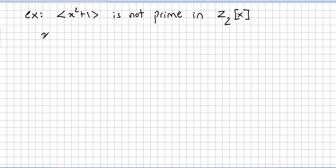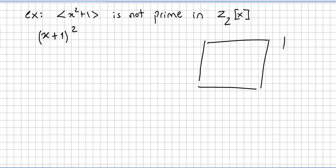Recall the definition of a prime ideal: a proper ideal A of a commutative ring R is said to be a prime ideal of the ring if for A and B in the ring, AB in the ideal implies that one of A or B is in the ideal. Here you have the ring and the ideal.